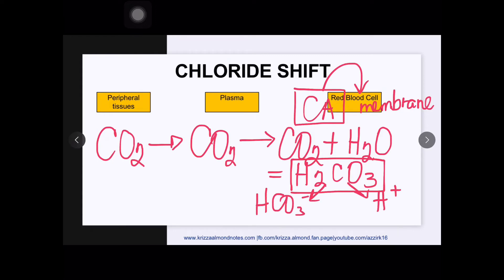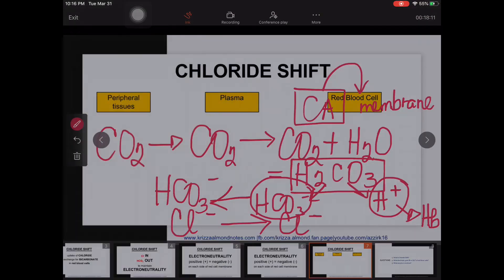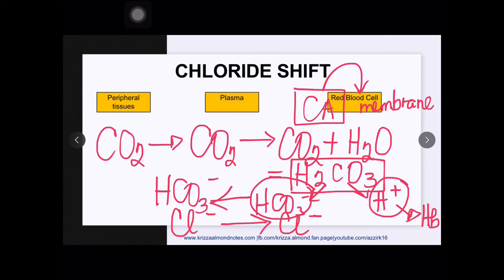Hydrogen ions will be combined with hemoglobin while our bicarbonate will go out into the plasma. And since we lost one anion it will be replaced by another anion in the form of chloride and so chloride will go inside the red blood cells. And this is what we refer to as our chloride shift.